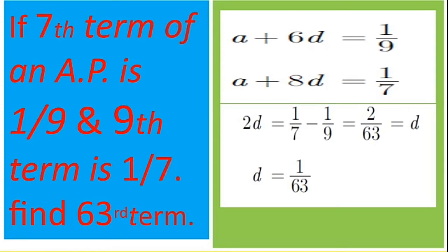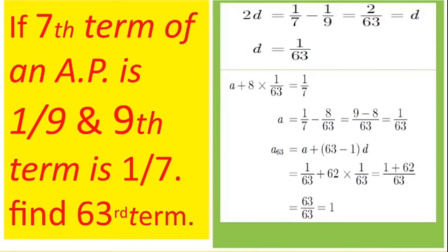Just substitute this D in any one of the equations. Let me substitute in the second equation. A plus 8 into 1 by 63 equal to 1 by 7. Once I solve this, I will get the value of A. So A also will be equal to 1 by 63 only.